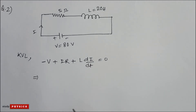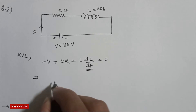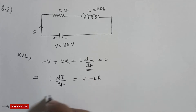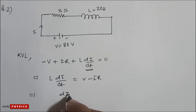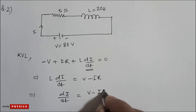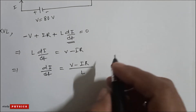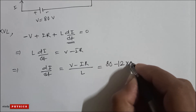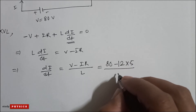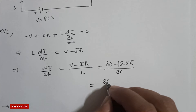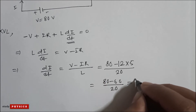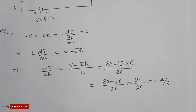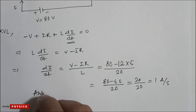Using KVL: −V + iR + L(di/dt) = 0, so L(di/dt) = V − iR, giving di/dt = (V − iR)/L. Substituting V = 80, i = 12 A, R = 5 Ω, L = 20 H: di/dt = (80 − 60)/20 = 20/20 = 1 A/s. The correct option is B.